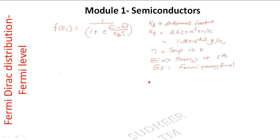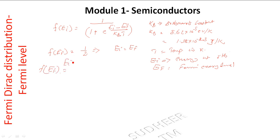The Fermi energy level is a special energy level. When EI equals EF, the equation becomes 1 divided by (1 plus e raised to 0), which simplifies to 1 divided by (1 plus 1), giving F(EF) = 1/2.